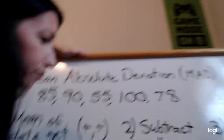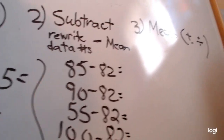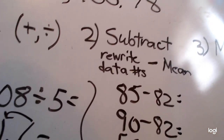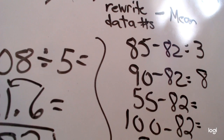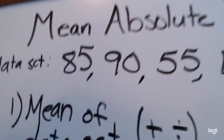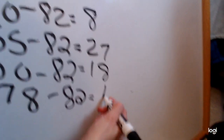Step two: subtract. First I rewrite the numbers in my data set: 85, 90, 55, 100, 78. Then I write my mean — 82 — behind all of those numbers and subtract. Always high minus low, no negative answers allowed. 85 minus 82 is 3. 90 minus 82 is 8. 82 minus 55 is 27. 100 minus 82 is 18. And 82 minus 78 is 4.